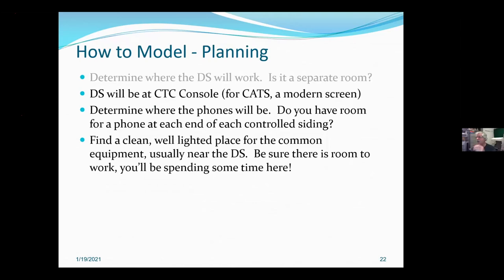Planning: in the CTC world we can assume the dispatcher will be at the console. We do need to figure out where the phones are going to be on the layout. We need to find a clean, well-lighted place to put the common equipment — usually on the floor on a wall, fairly low, somewhere near the dispatcher station. Be sure there's room to work, comfortable access, a place to sit so you can actually reach down and get to your wiring, and some lighting. These are the things I ask when people ask me to do one for them.